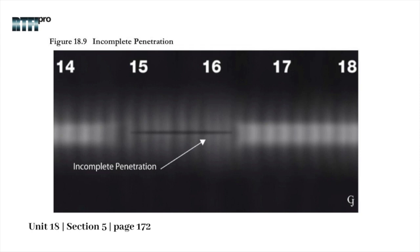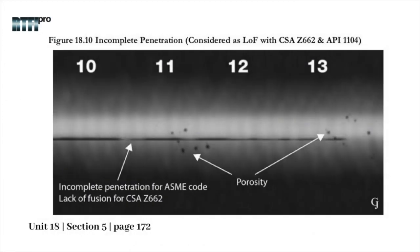The radiograph in figure 18.9 shows an incomplete penetration where both edges are missed. The radiograph in figure 18.10 presents an incomplete penetration with only one single edge missed. This same indication is classified as lack of fusion, non-fusion, or incomplete fusion in accordance with CSA Z662 and API 1104.